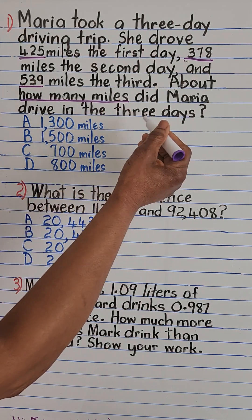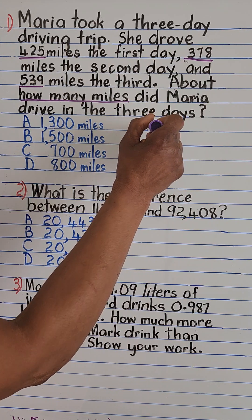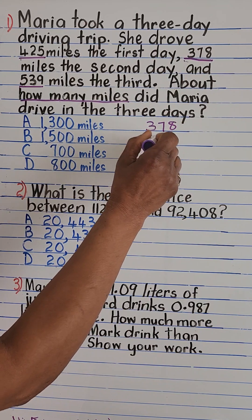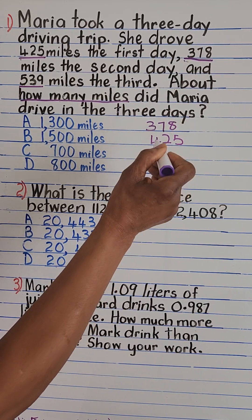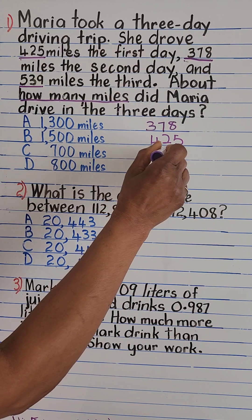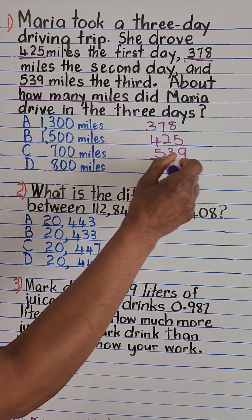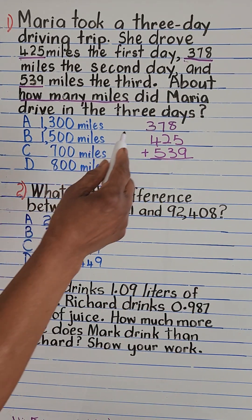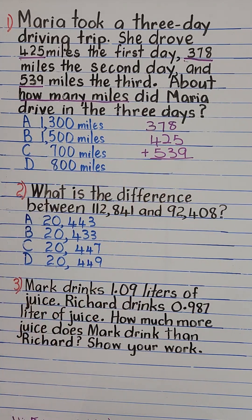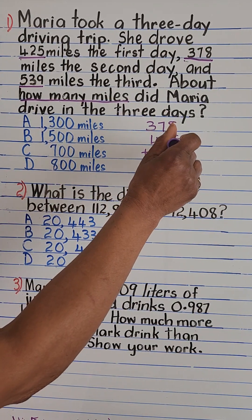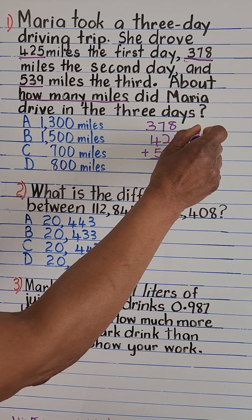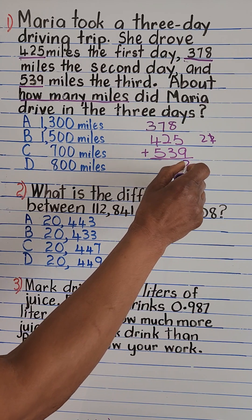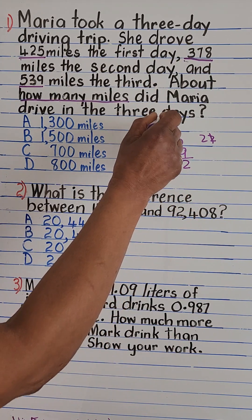So let's go ahead and add our numbers: 378, 425, 539. 'How many' means we add. 8 plus 5 is 13, plus 9 is 22 — write 2 at the bottom and carry 2 up top.